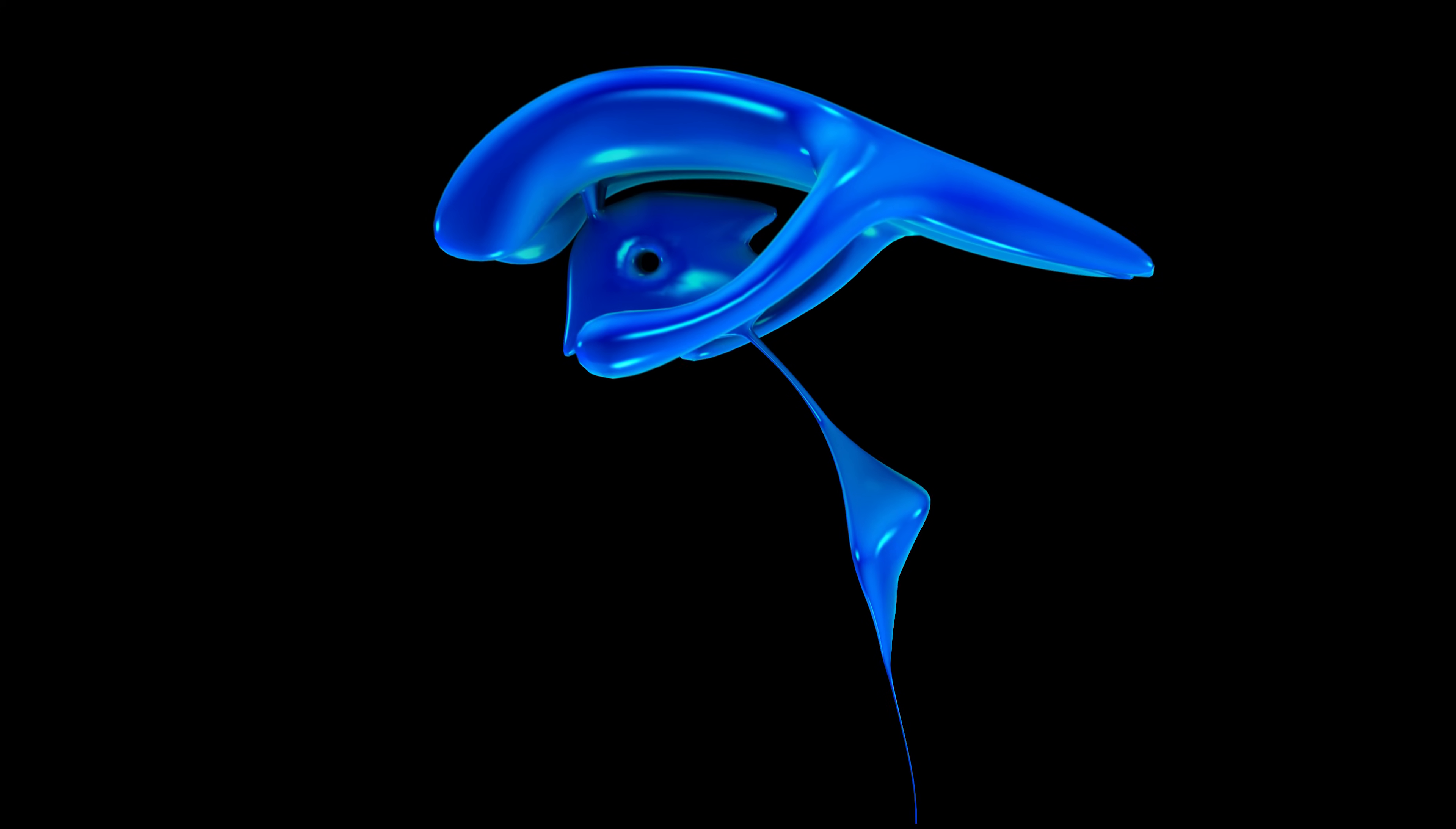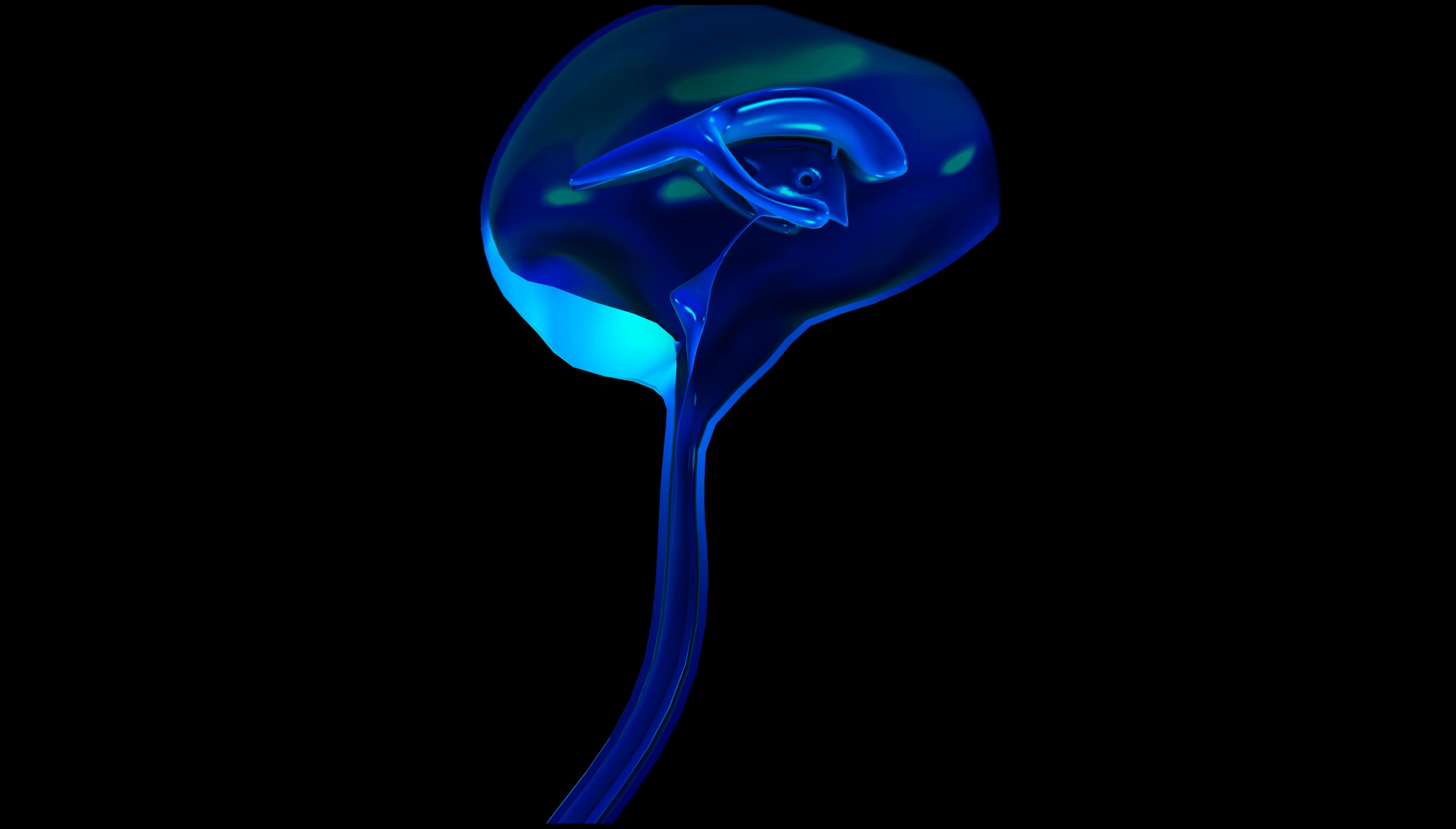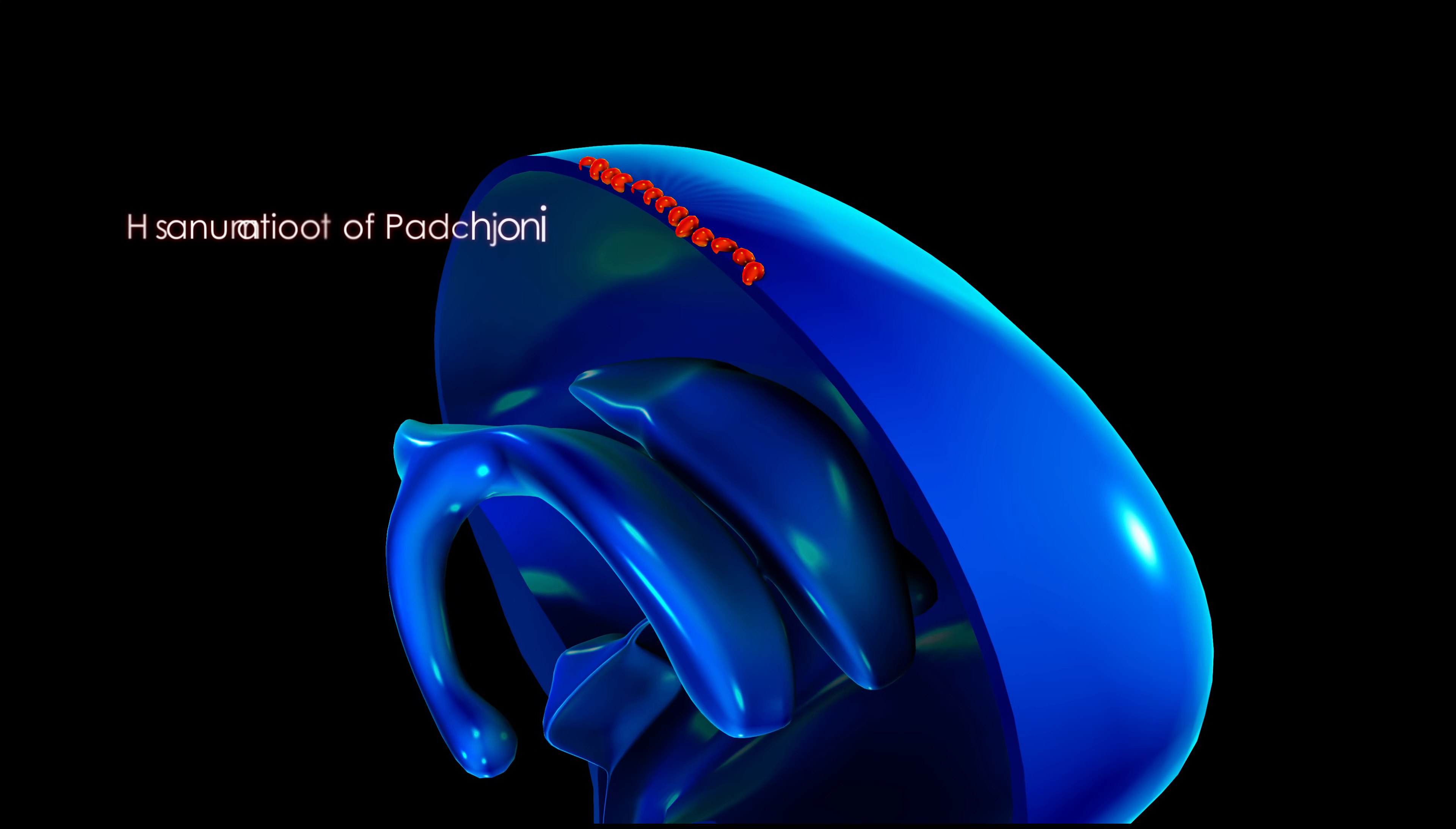The CSF will leave the fourth ventricle through the foramen of Magendie to fill the subarachnoid space. The CSF is then absorbed at the top of the skull by the arachnoid granulations of Pacchioni.